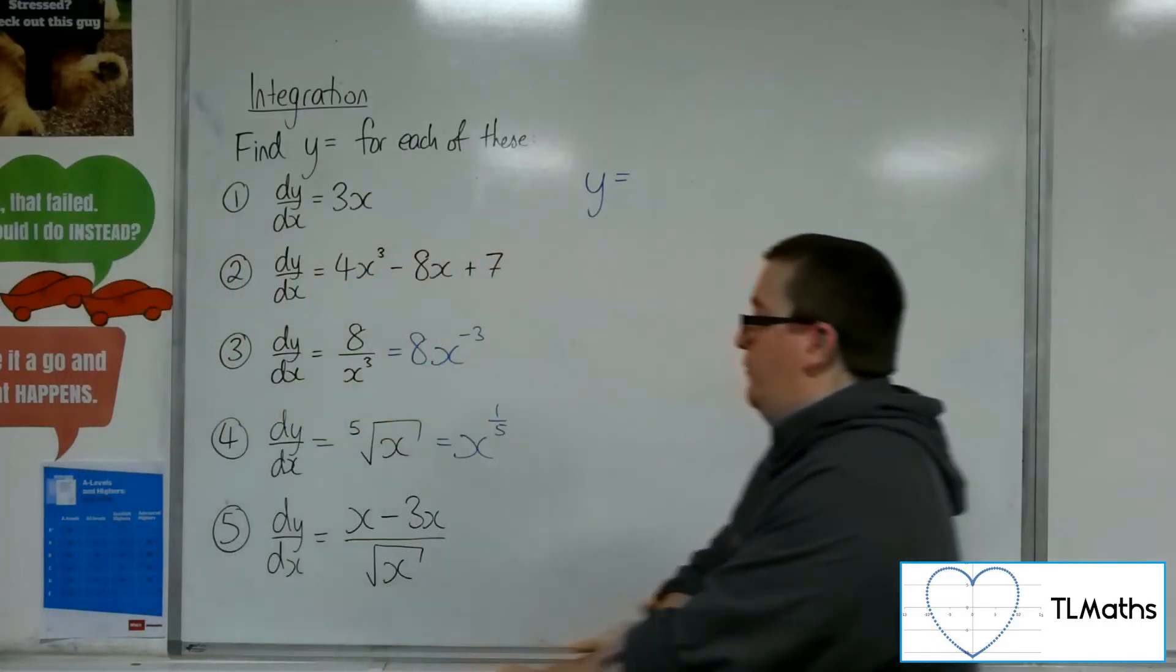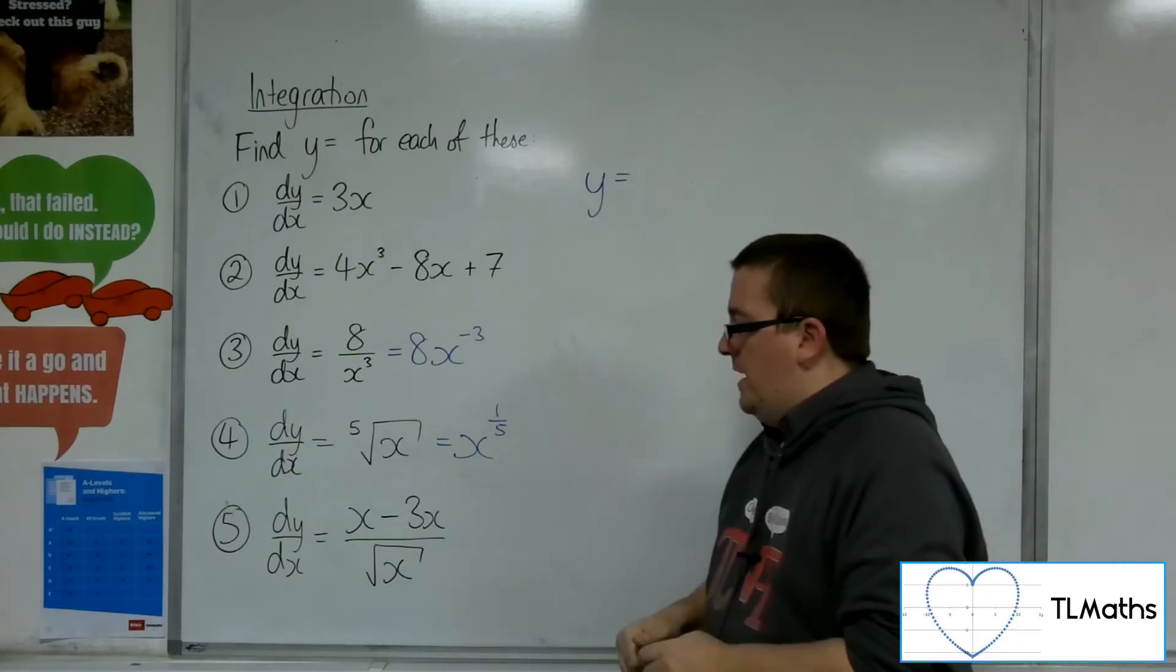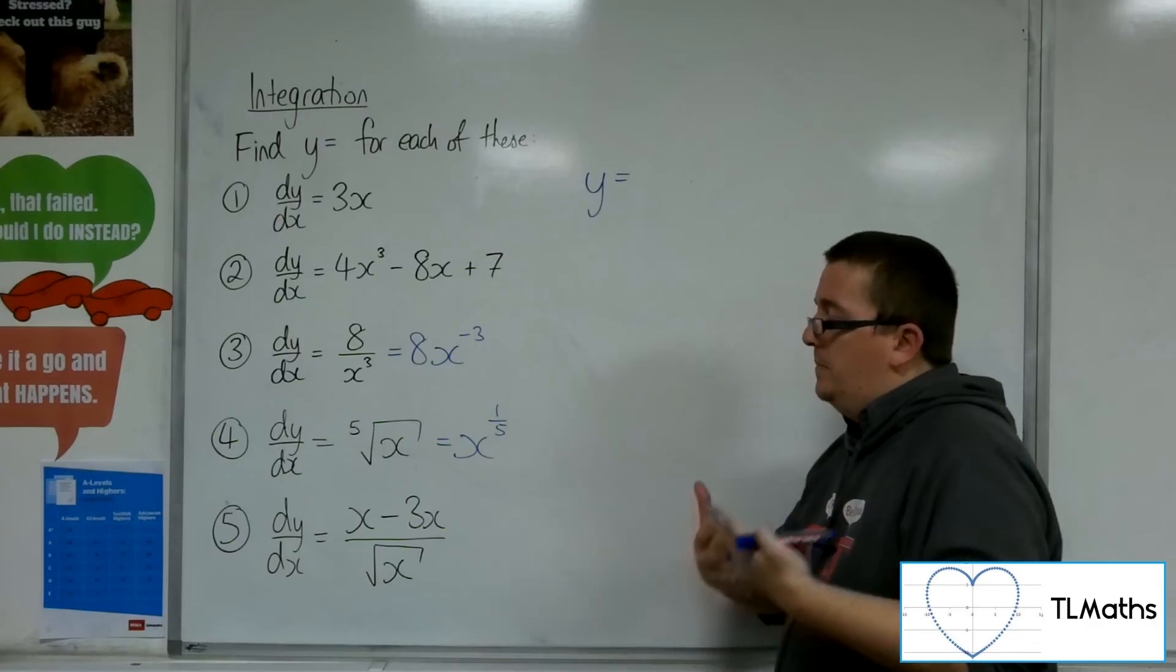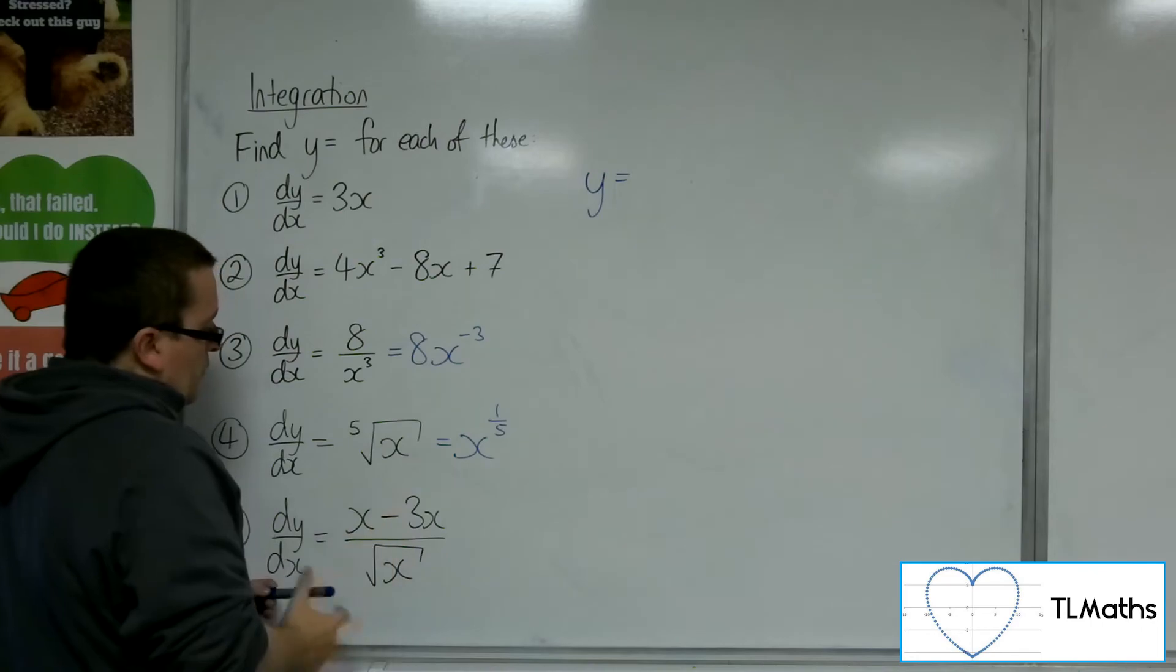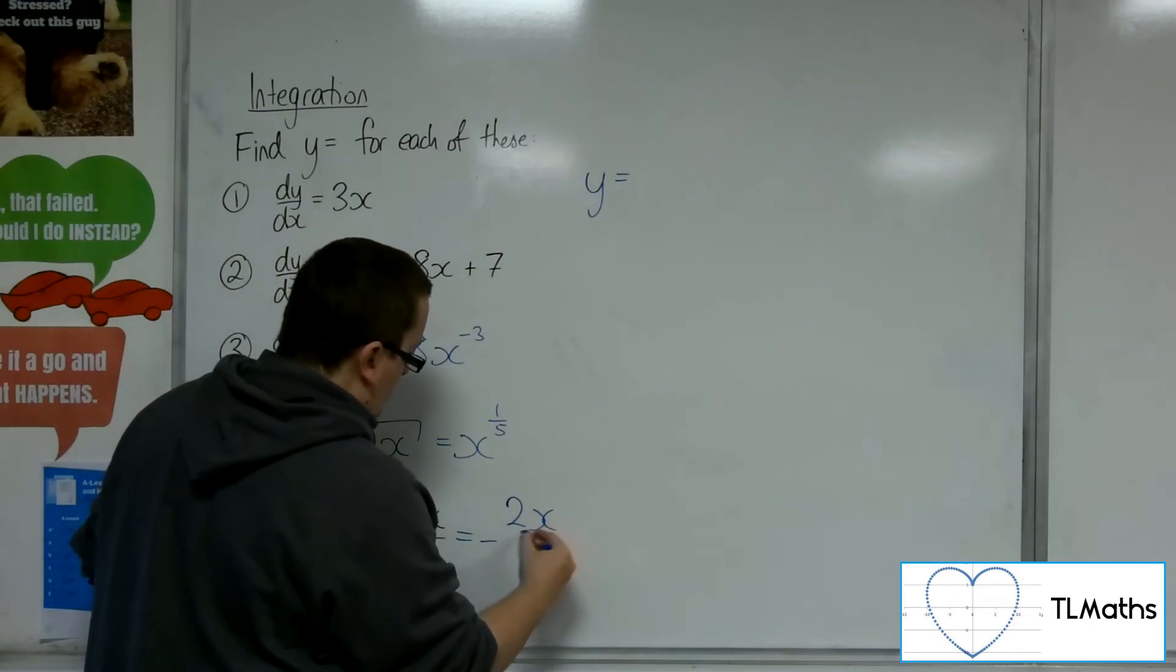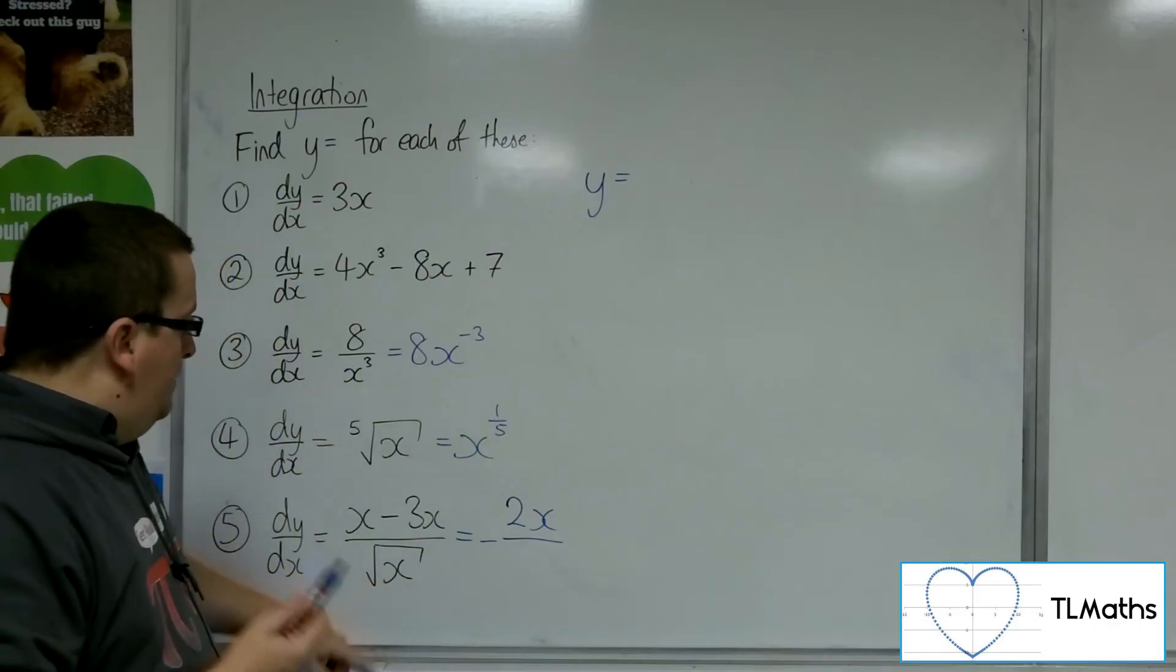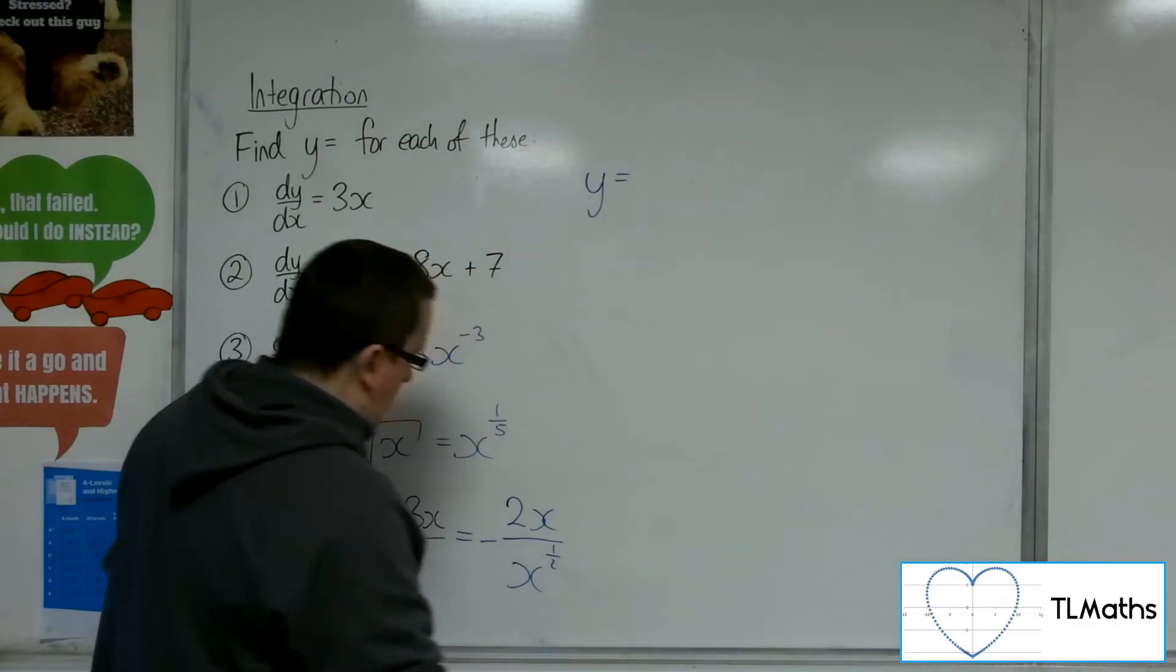So, finally, number 5. Now, 5 is a little bit fiddly, because we've got x minus 3x in the numerator, and the square root of x in the denominator. Now, obviously, this is a fraction that hasn't been simplified. So I've got this x take away 3x, which is going to be minus 2x, so I can simplify that bit to start off with. But, I'm still not going to be in a format that I'm going to want to work with and be able to integrate. So I'm going to rewrite the root x as x to the half.